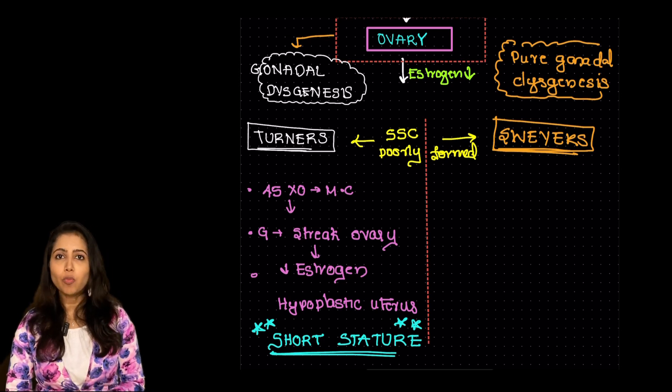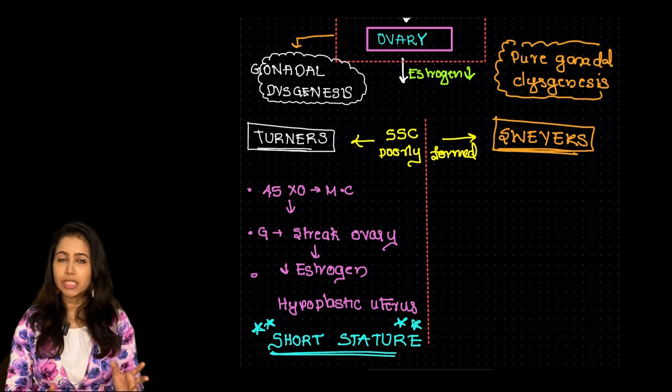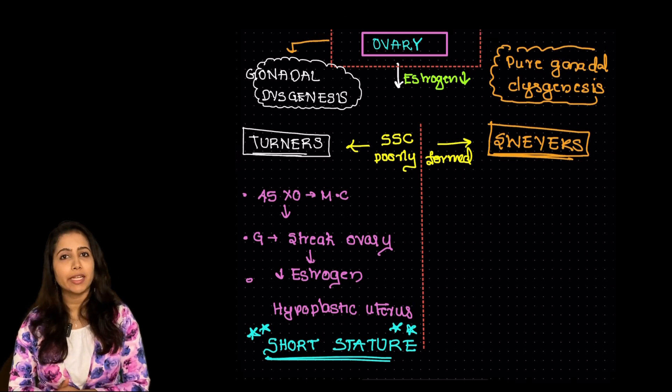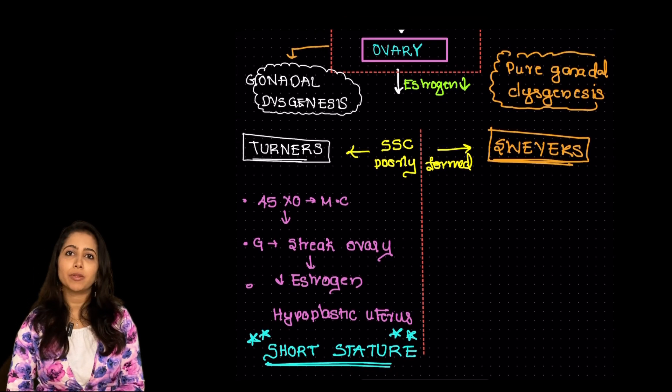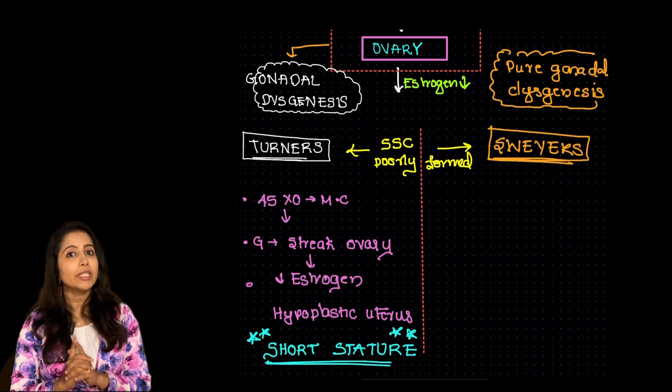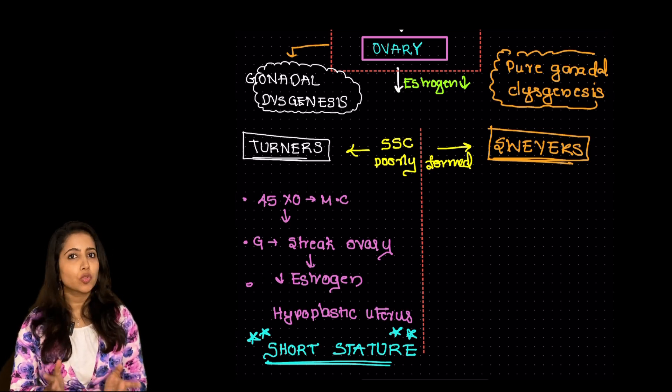So in case of Turner's syndrome we would be giving the patient estrogen initially and later on adding progesterone as well so as to protect the lining of endometrium. Alright. Now the next entity is the Swyer's syndrome.